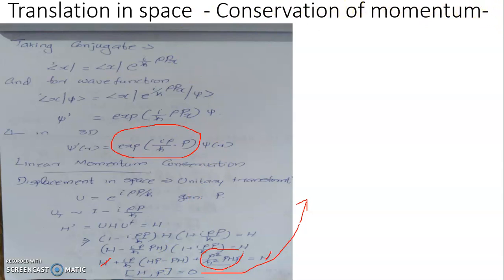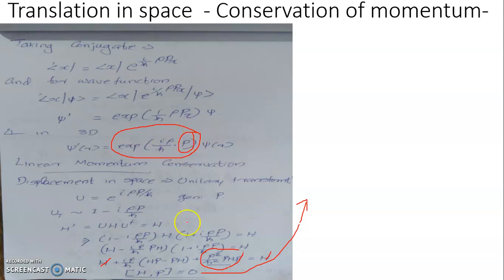So if this unitary transformation is a symmetry transformation such that the Hamiltonian is left invariant, then definitely the generator of this unitary transformation, which happens to be linear momentum, must commute with the Hamiltonian H. Under such a situation, linear momentum is a constant of motion, and this eventually gives rise to the conservation law of linear momentum: if no external force is acting on the system, the total linear momentum is conserved. This is true in quantum mechanics also — translation in space stems from the continuous evolution under a unitary transformation with generator equal to the linear momentum operator.